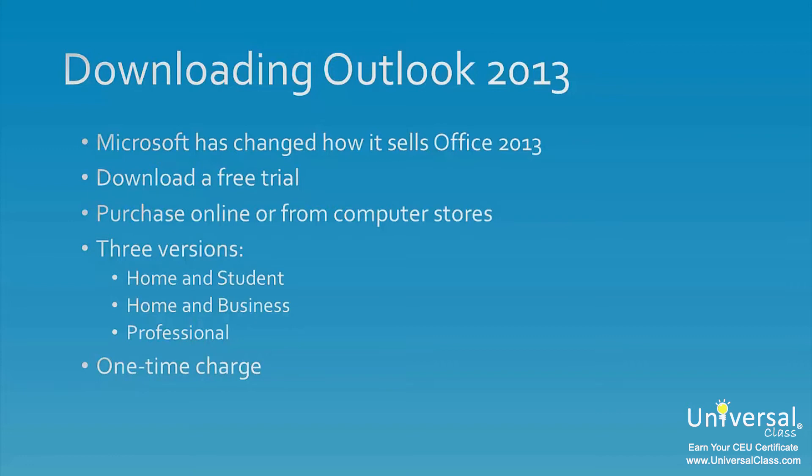If you want to purchase the software, Microsoft now gives you two choices. As always, you can buy the software either online or from most Office supply and computer stores. The prices vary depending on what version you want to purchase. There are three versions: Home and Student, Home and Business, and Professional.